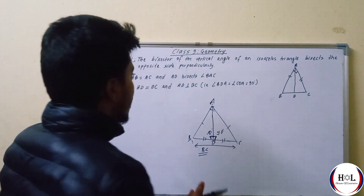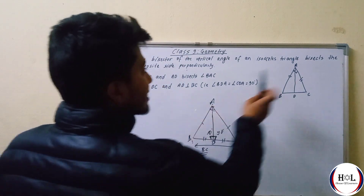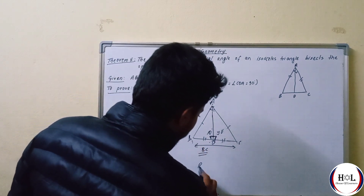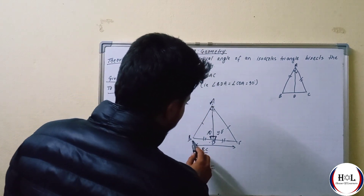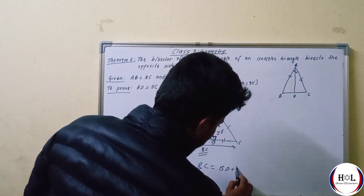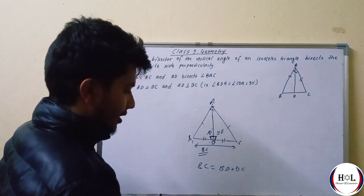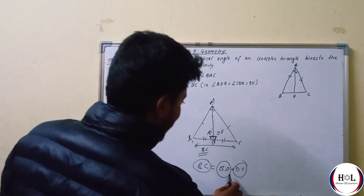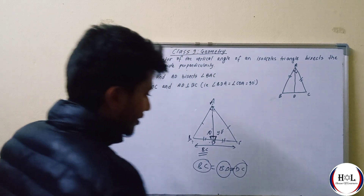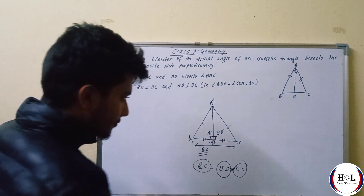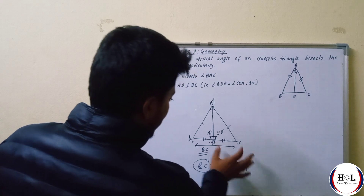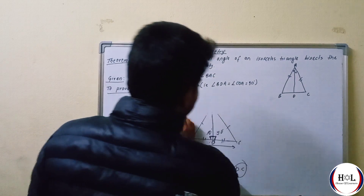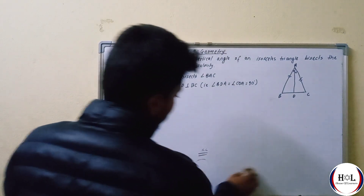BD is equal to BC. So what is BD plus DC? BD plus DC is equal to BC. BC is equal to BC. It means BD plus DC is equal to BC. BD is equal to BC minus DC. This can be known as the midpoint.